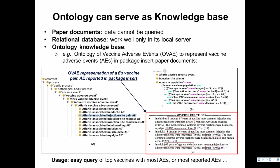Ontology can also support knowledge-base development — it itself can be used as a knowledge base. Knowledge base means the ontology contains knowledge. A paper can contain knowledge but cannot be queried. A traditional database can store knowledge but works via a local server, making it harder for outside computers to access the data. Ontology can be shared everywhere, giving it advantages over papers or traditional databases as a knowledge base.